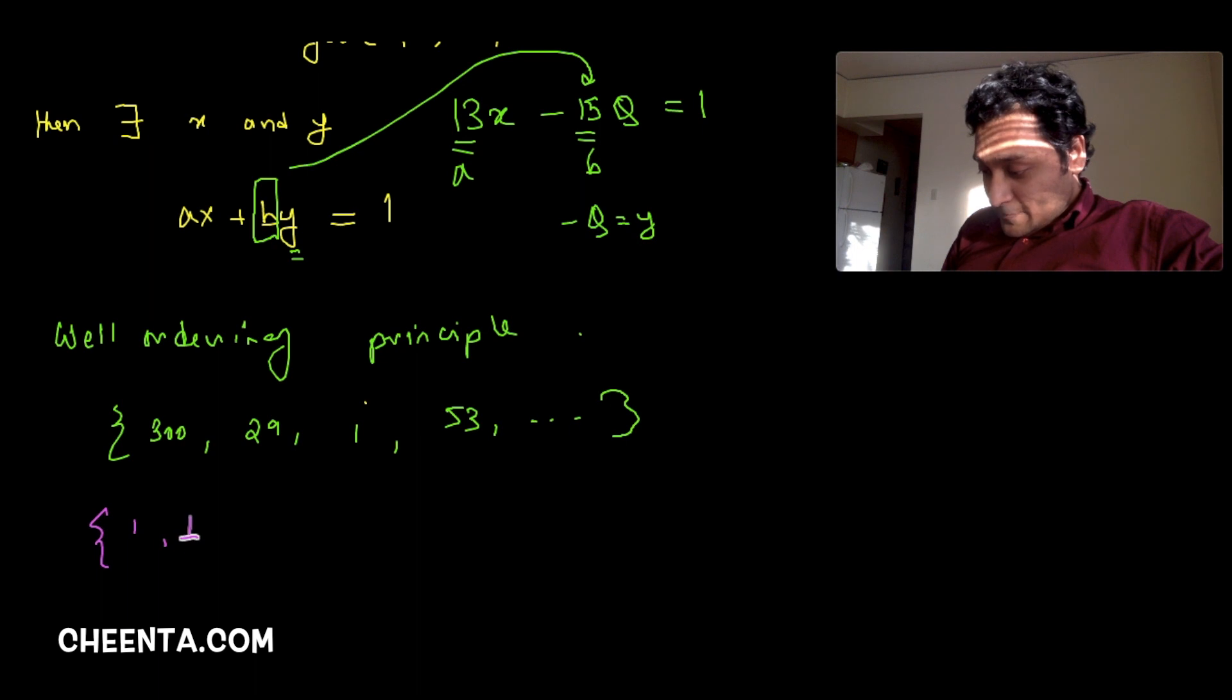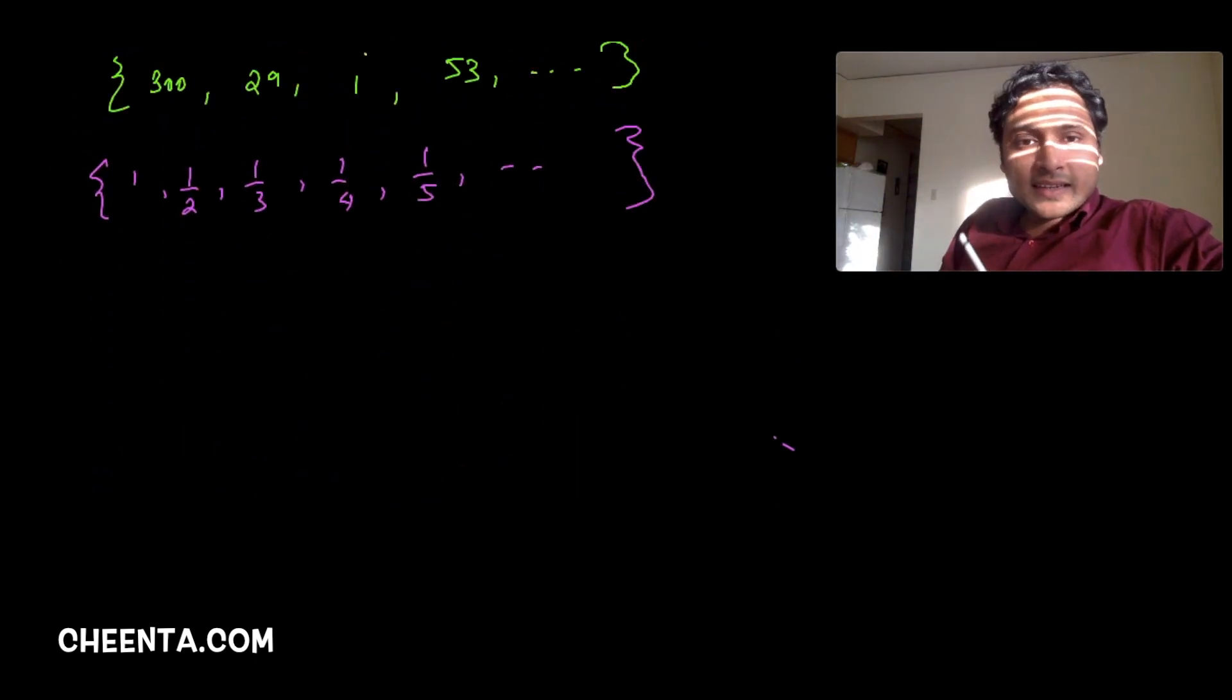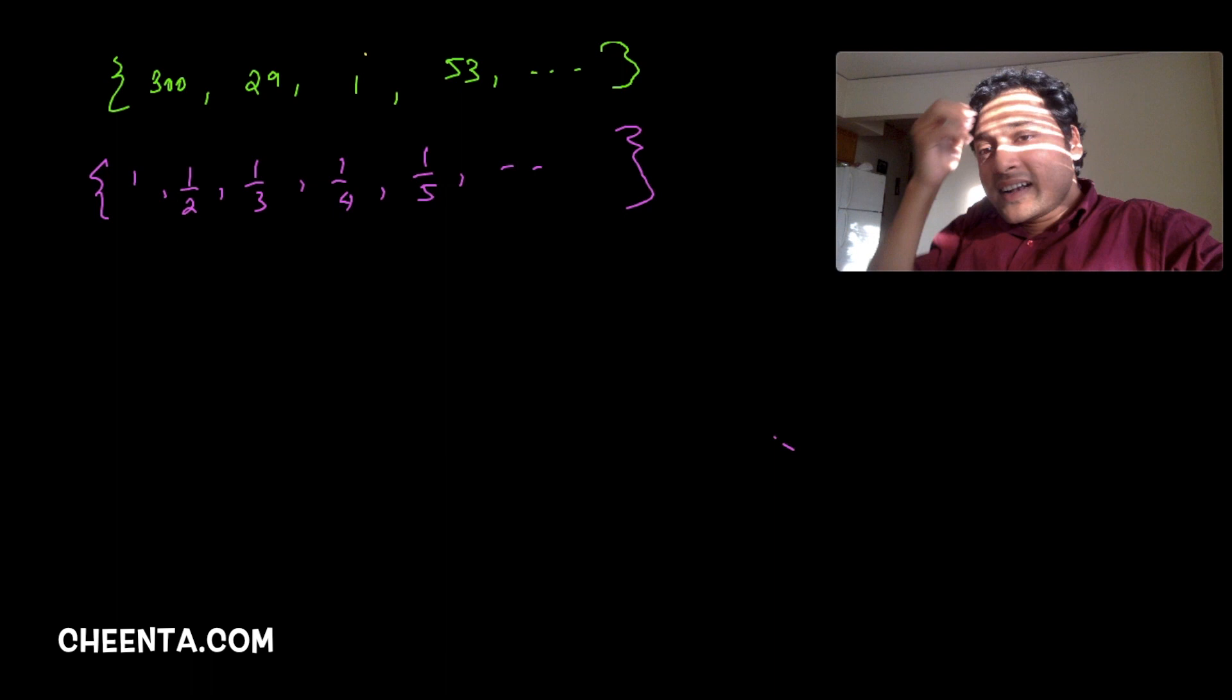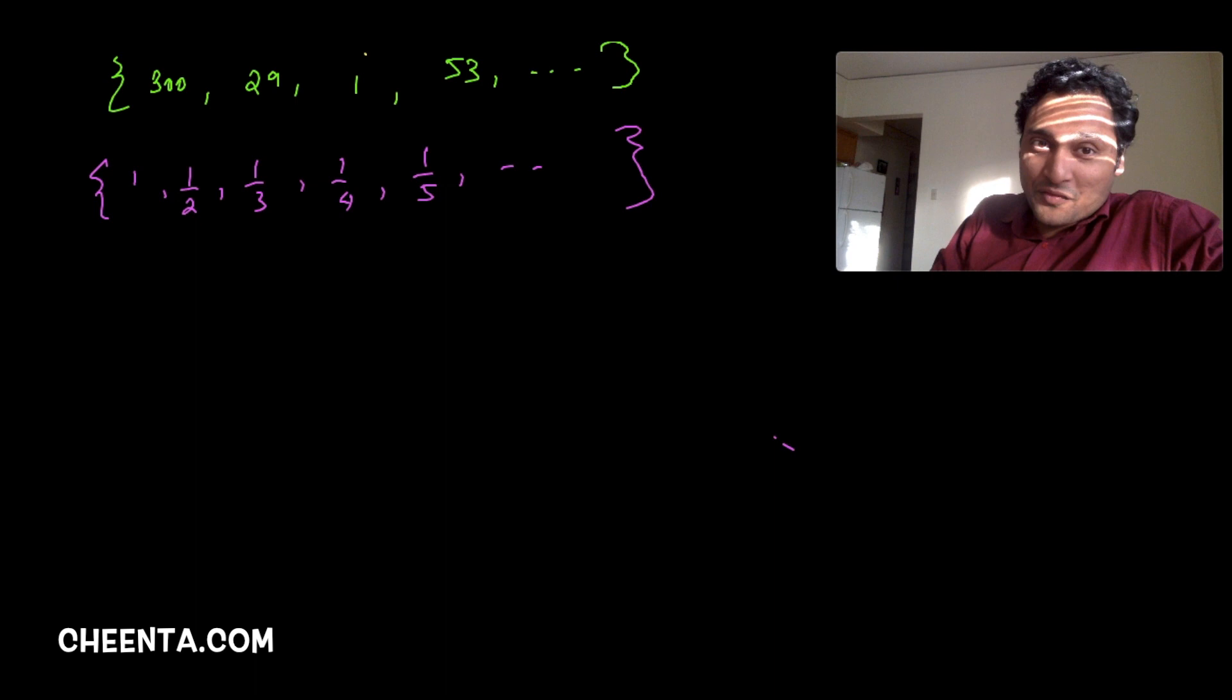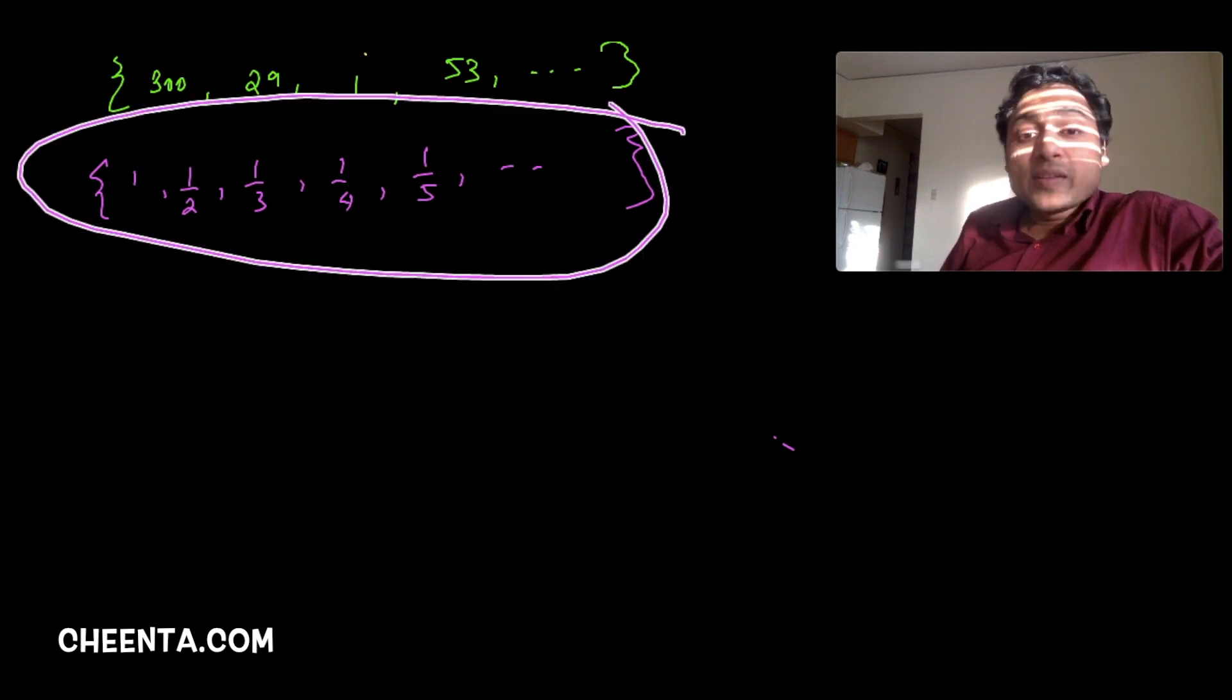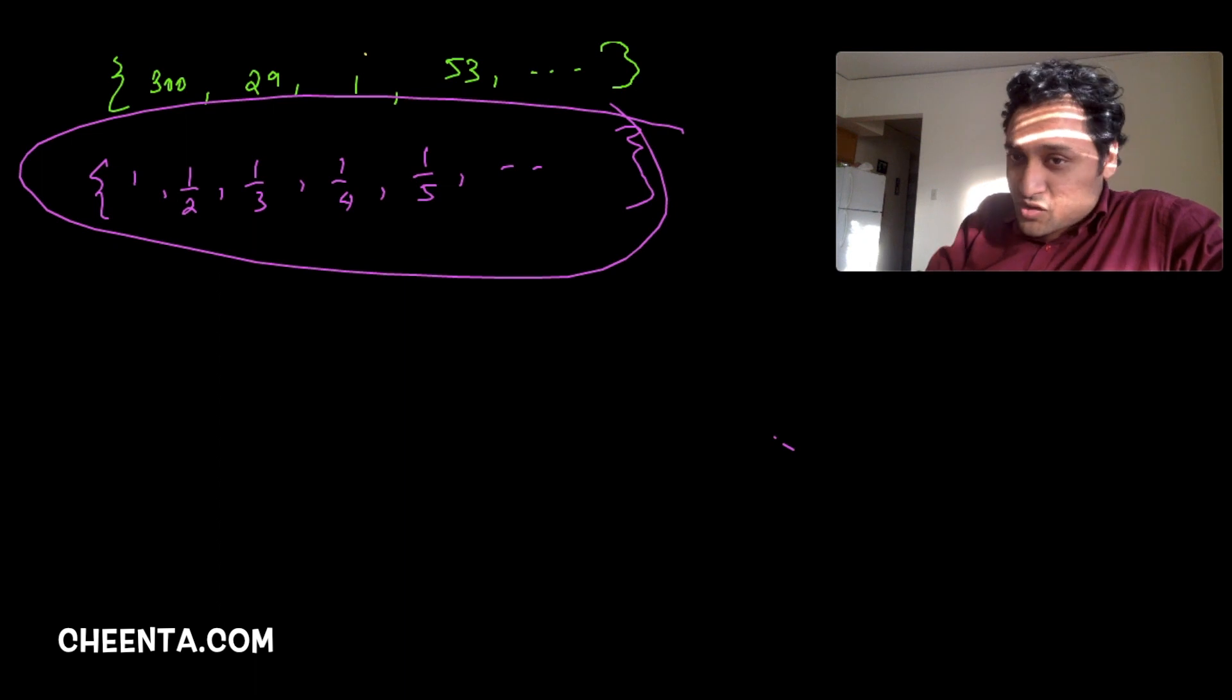For example, if I take this set of rational numbers, basically 1 over n, and if I keep on doing it, this set does not contain any minimum number because it doesn't contain 0. It is just 1 over n, 1 over n, and so on. It keeps on decreasing but it never contains a minimum number. Its infimum is 0. Infimum is a different idea, it's the largest number which is smaller than everything in the set. But there is no minimum number in this set of rationals.